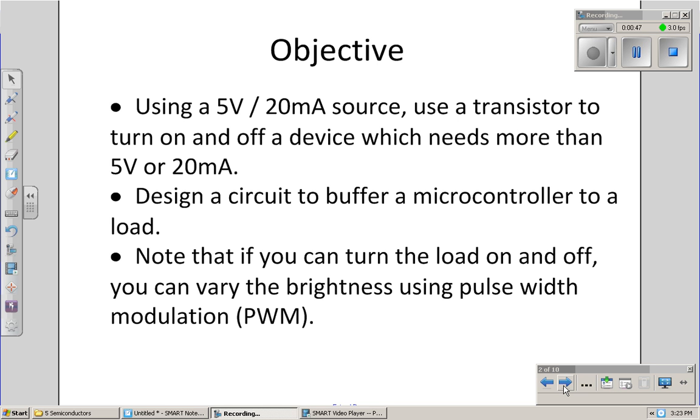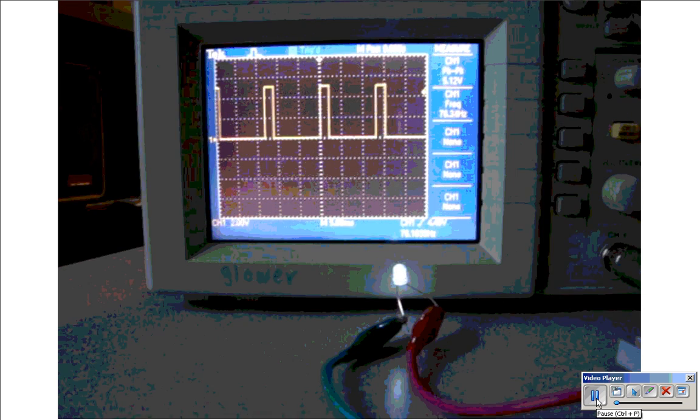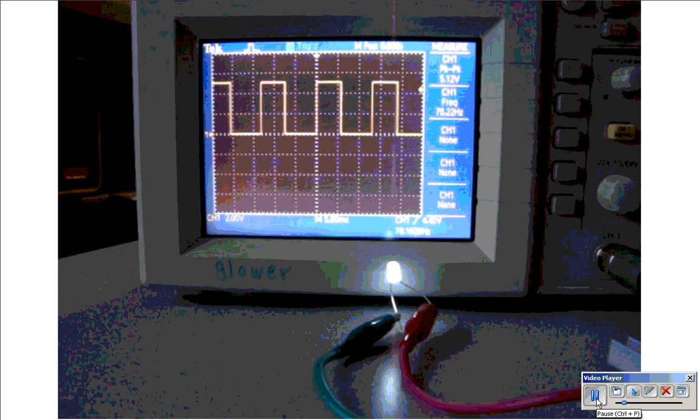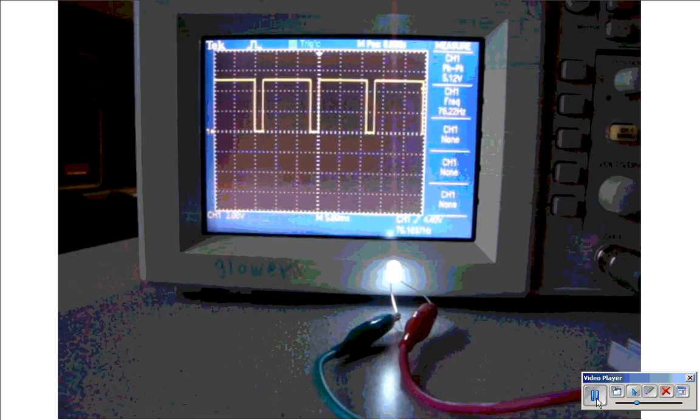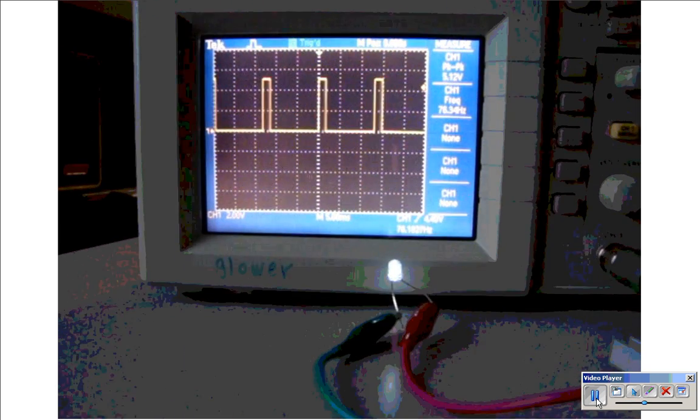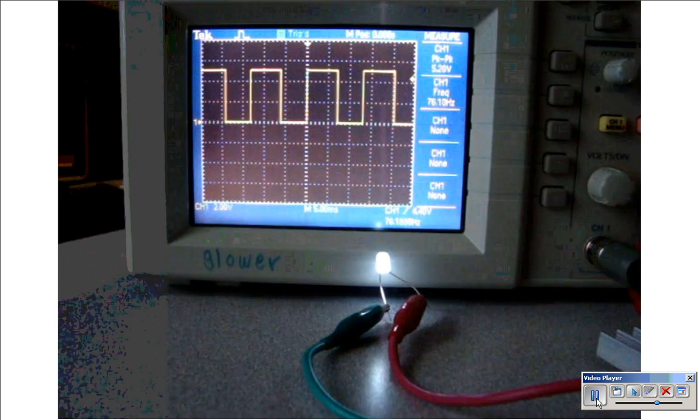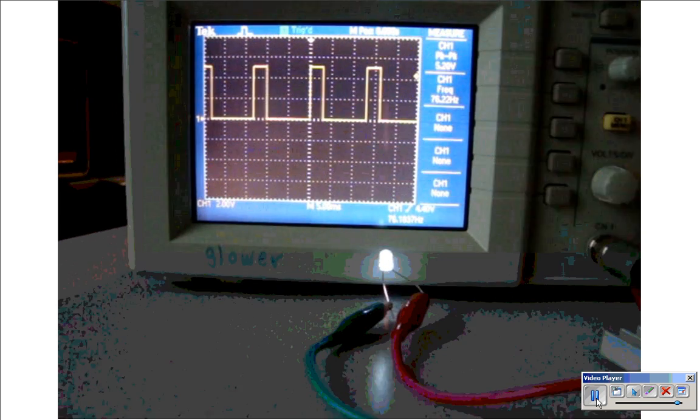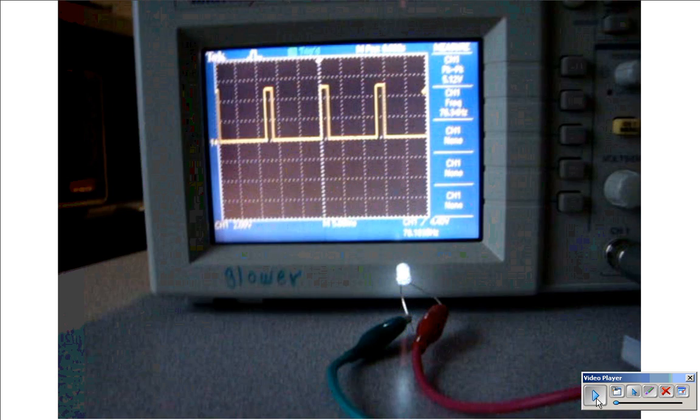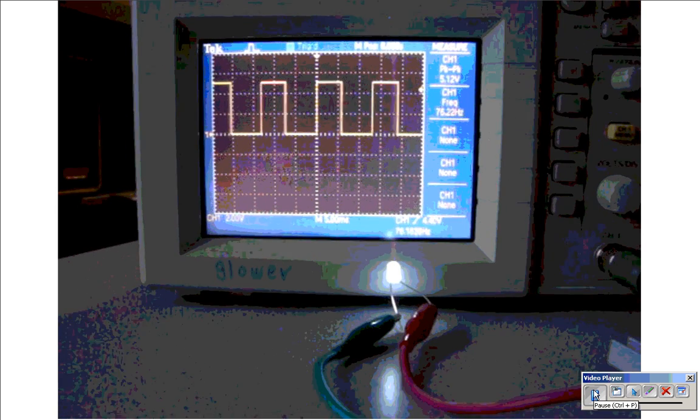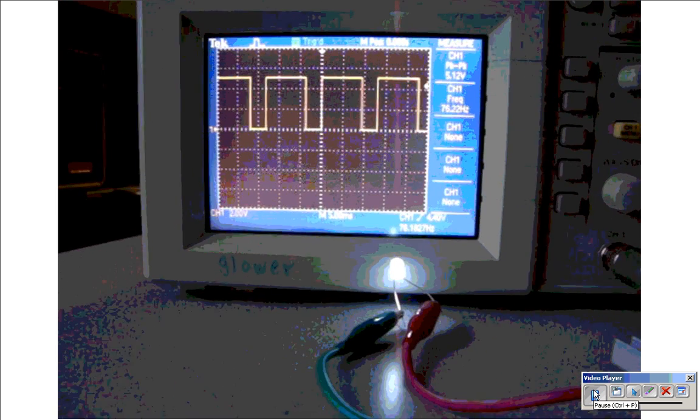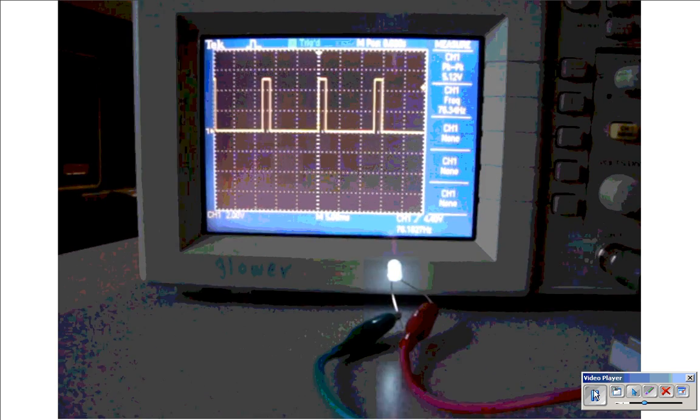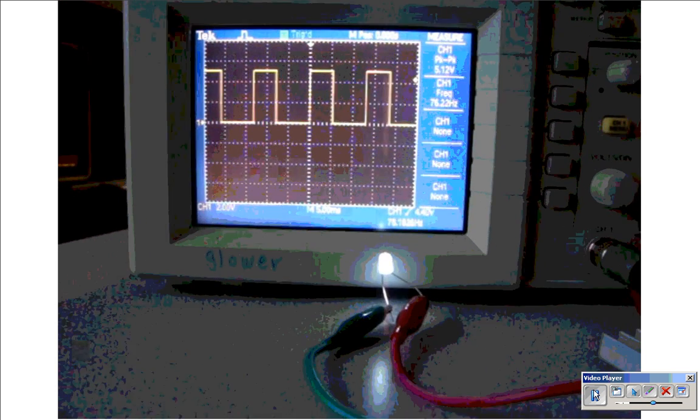Note that if I can turn the load on and off, I can vary the brightness using pulse width modulation (PWM). Pulse width modulation is where you vary the on-off time of a signal. On the oscilloscope there, you see a 0 volt, 5 volt signal driving a light. When the output is 5 volts, the light is on. When it's 0 volts, the light is off. By varying the on time, you can see that the light gets brighter. If I can drive a device fully on, fully off, I can go anywhere in between using pulse width modulation.